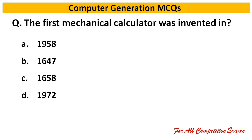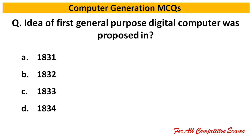Next question: The second generation computer was based on — Right answer is transistor. Next question: The first mechanical calculator was invented in — Right answer is 1647.